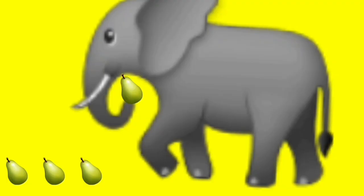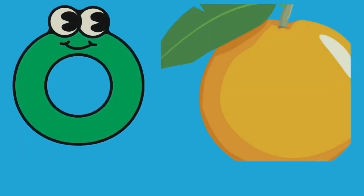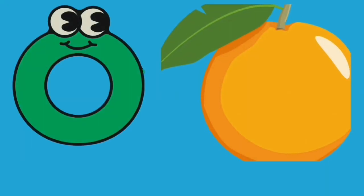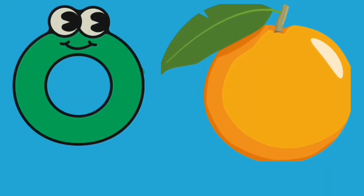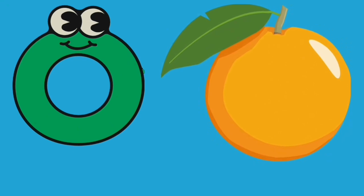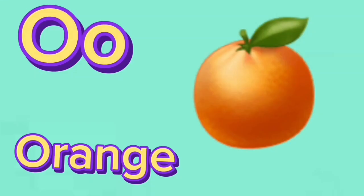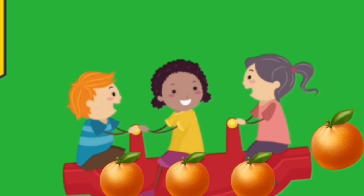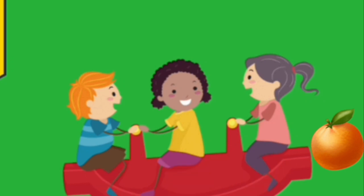An elephant is eating pear. O for Orange. Its color is orange. It starts with the letter O. Babies are eating oranges.